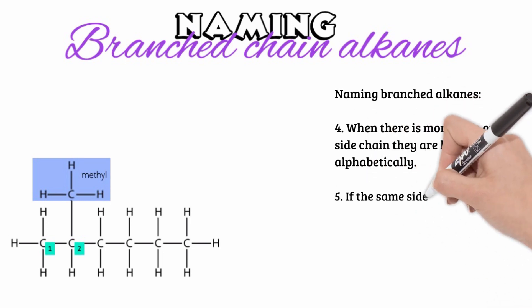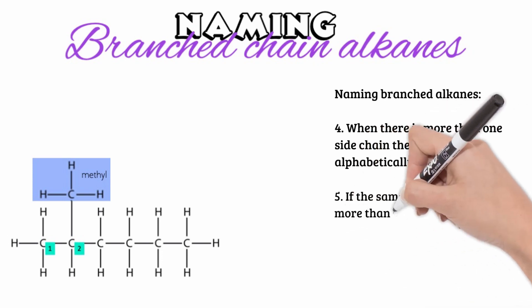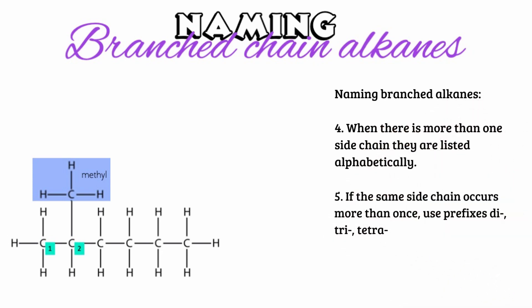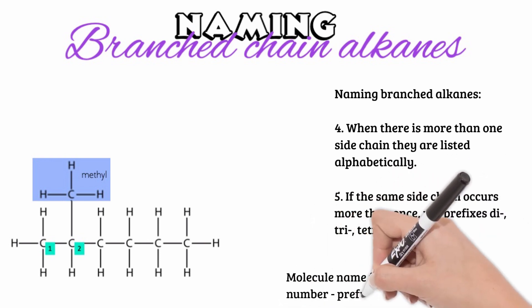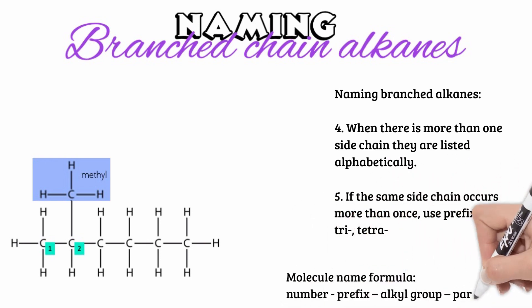Step five: if the same side chain occurs more than once, use prefixes like di-, tri-, or tetra-. So our formula for naming these types of molecules becomes: number, prefix, alkyl group, and parent group. Let's have a look at a few examples together.